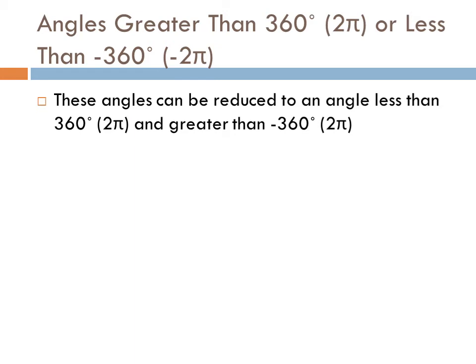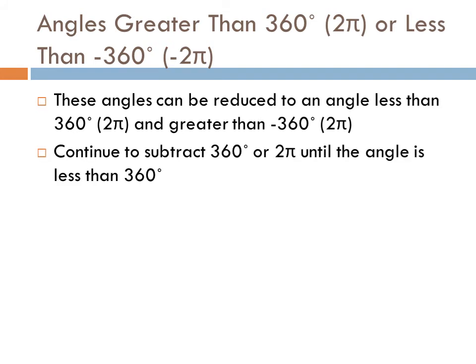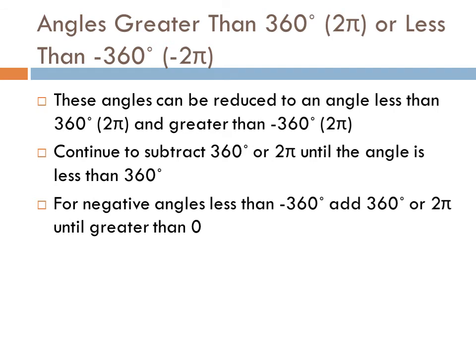What about angles greater than 360 or 2 pi, or less than negative 360 or negative 2 pi? These angles can be reduced to an angle less than 360 and greater than negative 360. All you have to do is continue to subtract 360 degrees or 2 pi until the angle is less than 360. For negative angles, add 360 or 2 pi until you get greater than zero. I call this removing the extra rotation, and quite a few problems will actually have angles greater than 360.